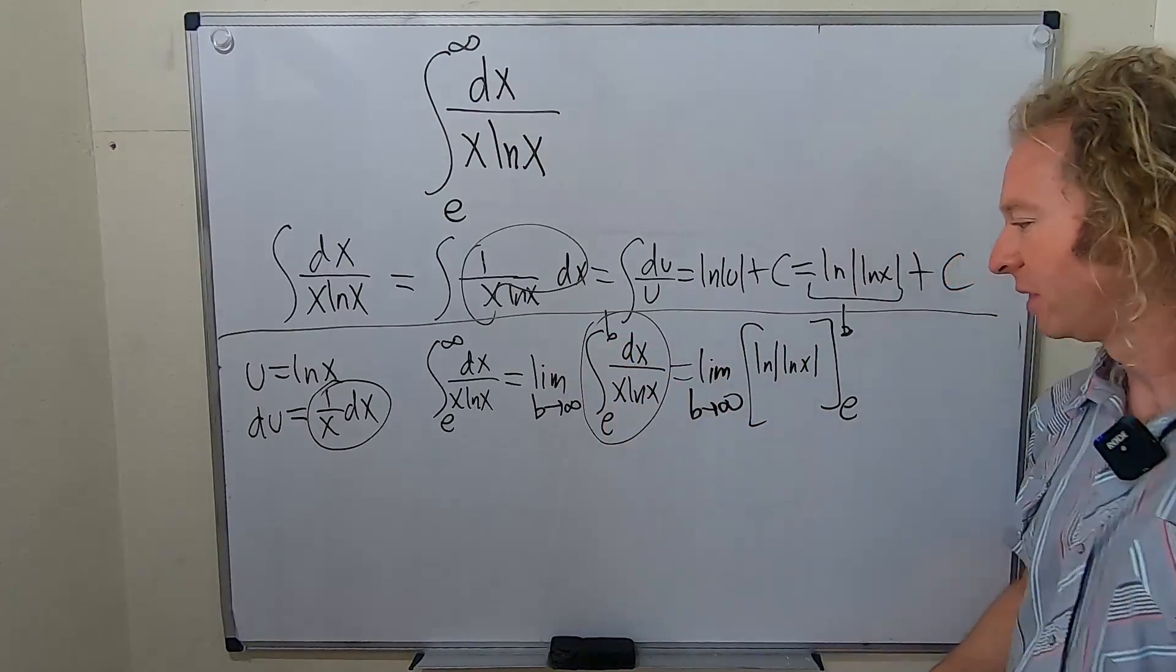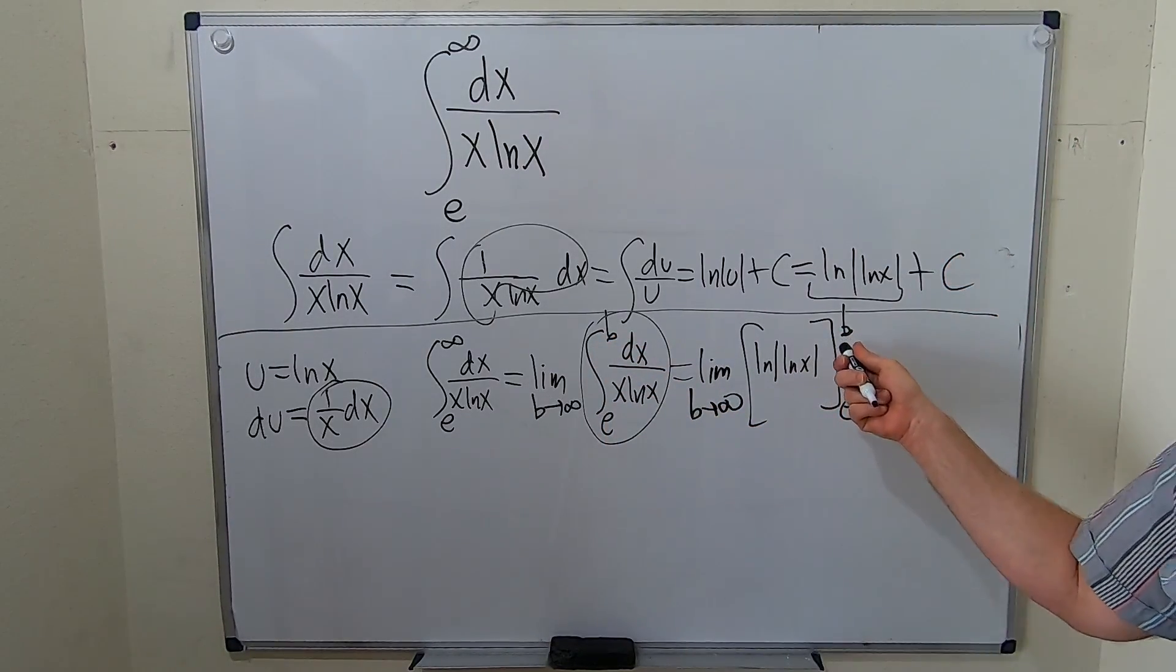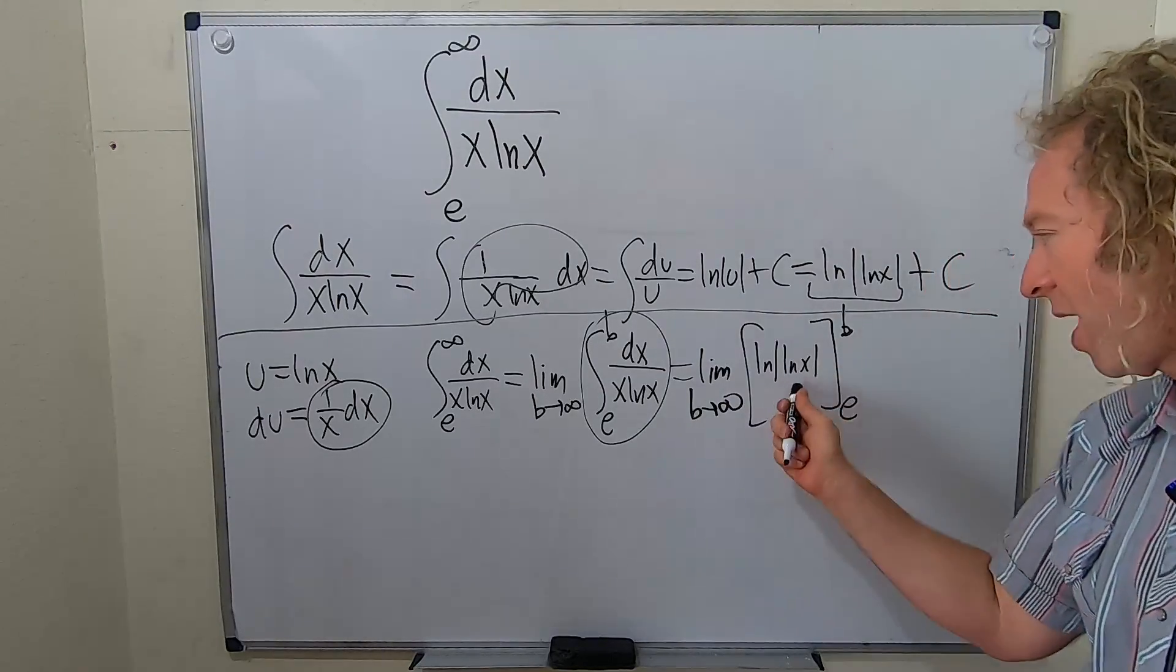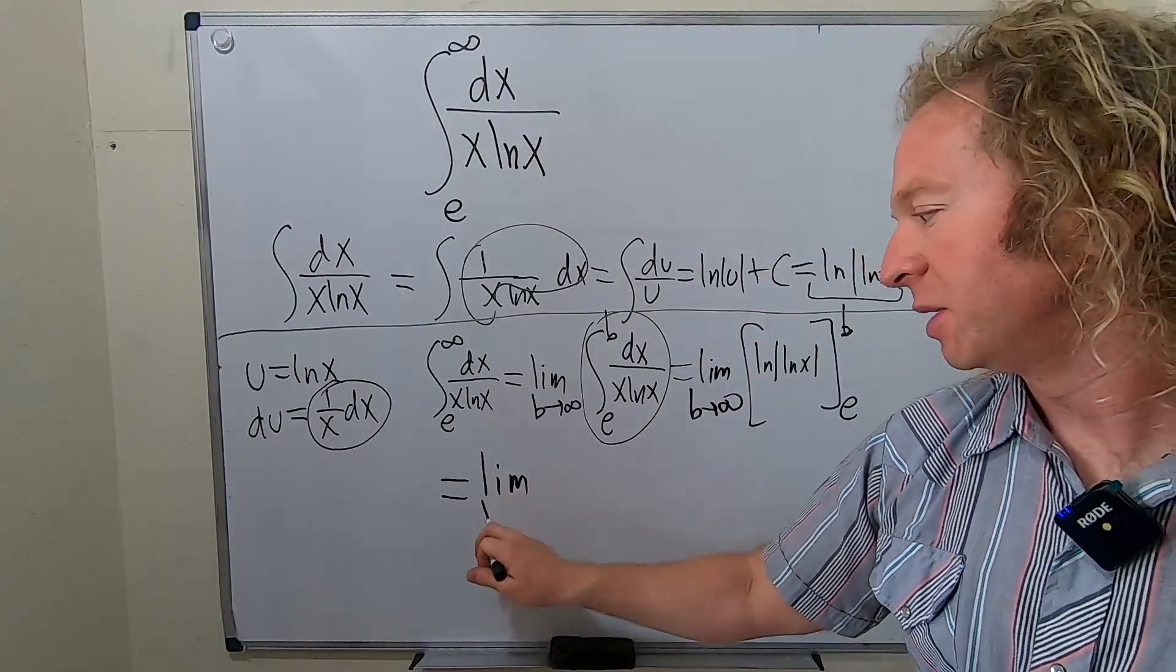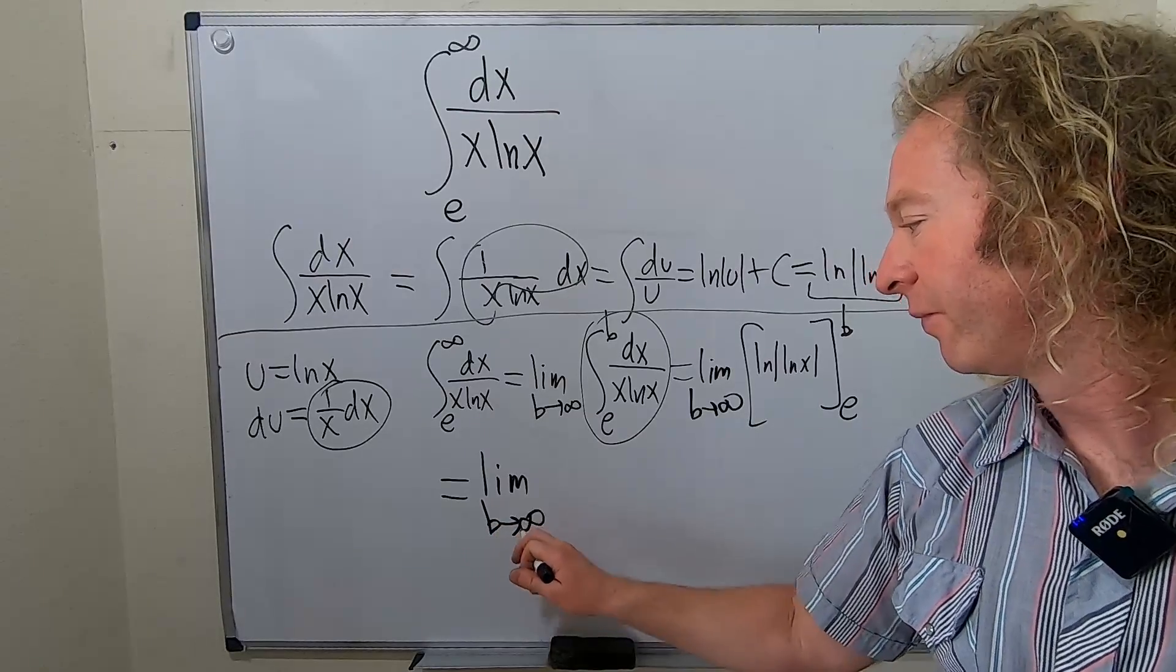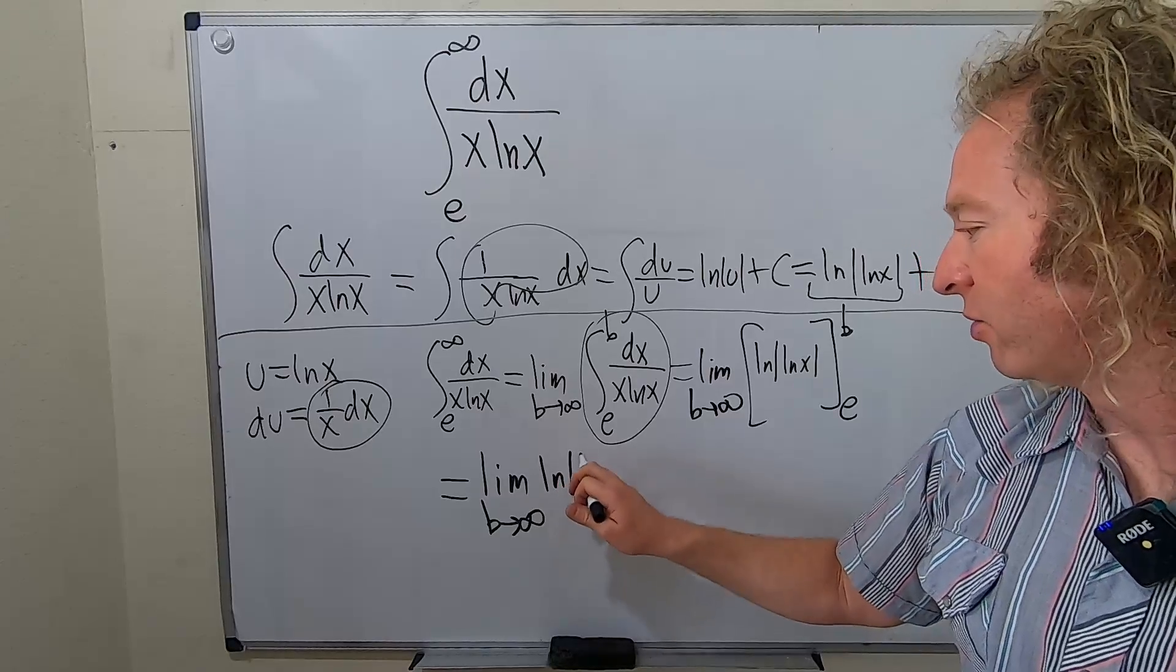So now we have to do this. This basically means you plug in the b first, subtract and plug in the e. So let's do it. So this is the limit as b goes to infinity.